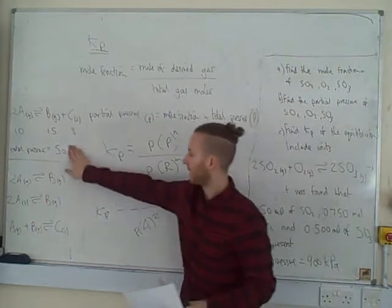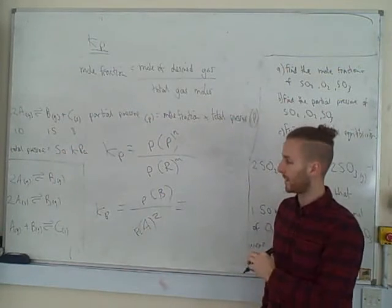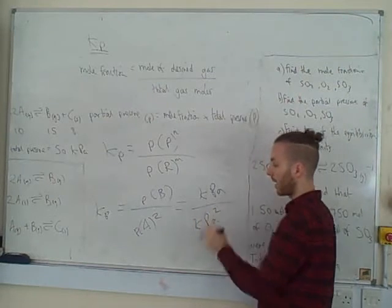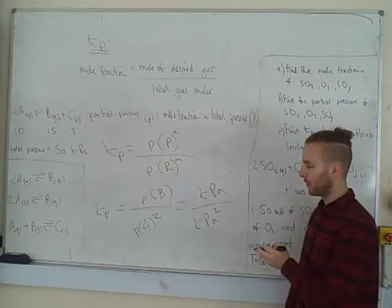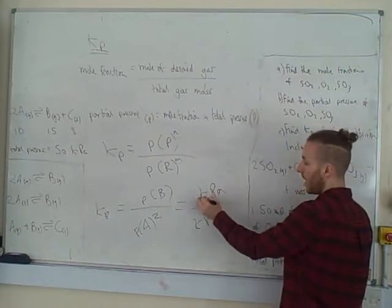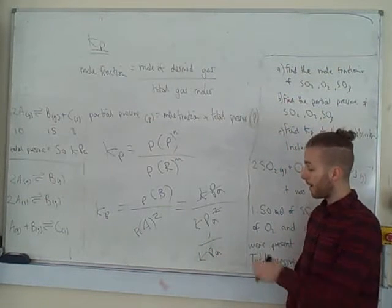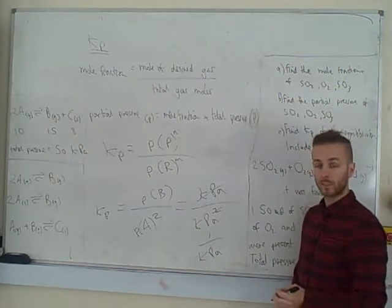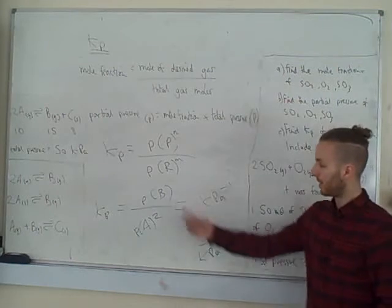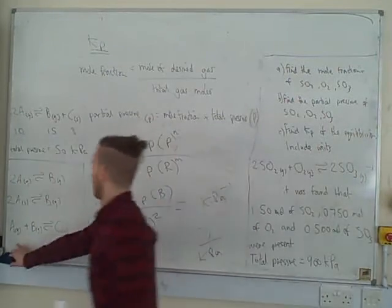Each partial pressure has units of kilopascals. On the top we have kilopascals (one term), and on the bottom kilopascals squared (due to the power of 2). Cancelling down gives one over kilopascals — and since you can move something from the bottom by reversing the sign of the power, that becomes kilopascals to the minus one. So for this equilibrium, the units of KP are kPa⁻¹.